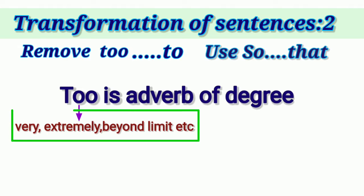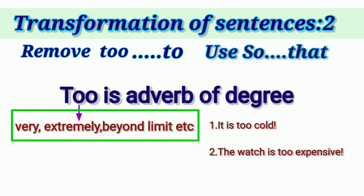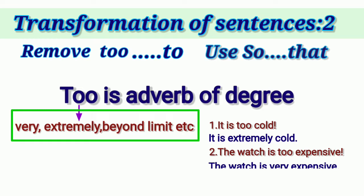TOO is an adverb of degree. It means 'very,' 'extremely,' 'beyond limit,' etc. It describes the degree of an adverb or adjective. For example: 'It is too cold' means it is extremely cold — we are describing the degree of coldness. 'The watch is too expensive' means it is very expensive.